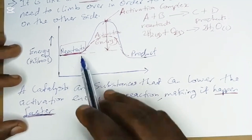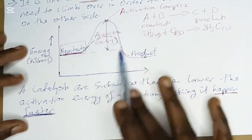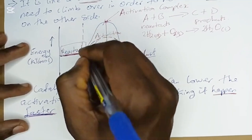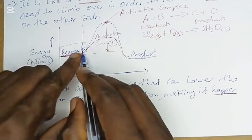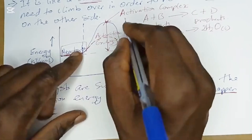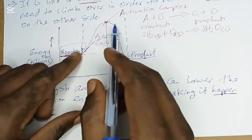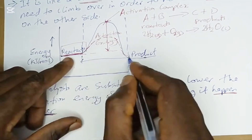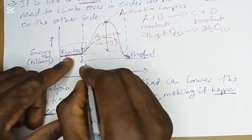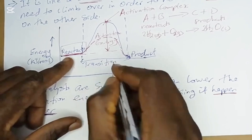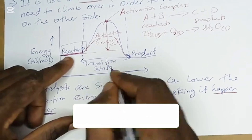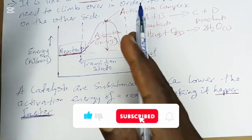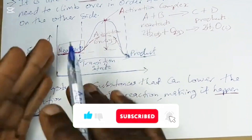There is another term we use in connection with activation energy. The stage between when the reactant starts climbing the barrier to the top is called the transition state. That is the state whereby the reactant converts to product — that state of conversion is called the transition state.